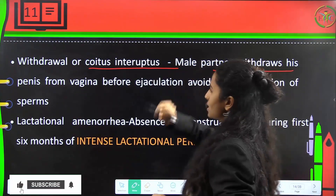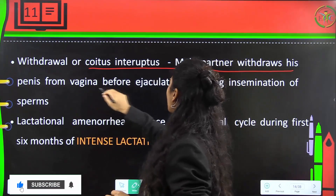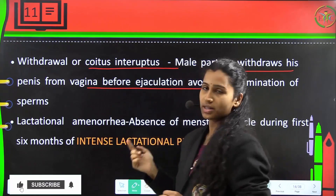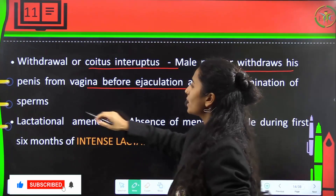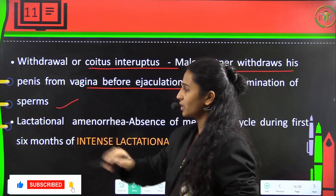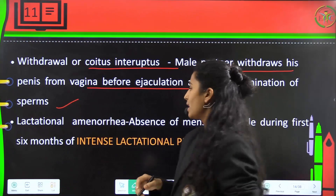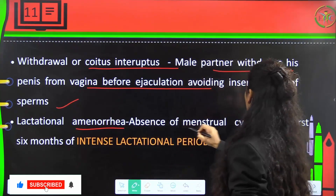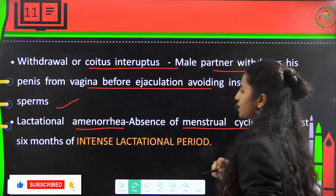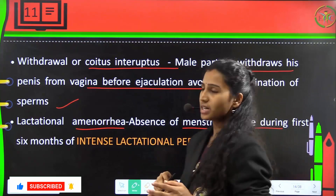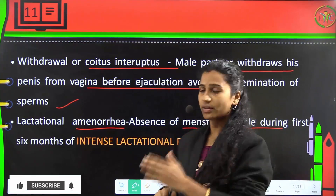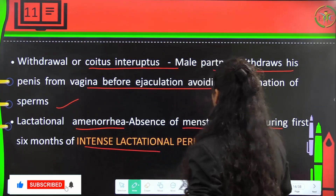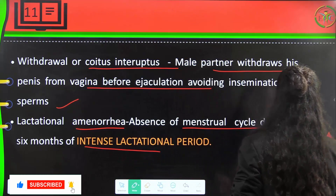In withdrawal, the male partner withdraws his penis from the vagina before ejaculation to avoid insemination. Lactational amenorrhea refers to the absence of the menstrual cycle during the first 6 months after parturition, which is an intense lactational period and acts as a natural contraceptive.